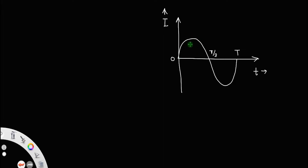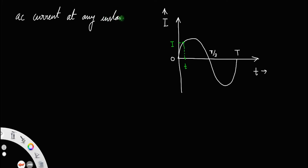Now, we are interested only in the positive half cycle. Let us take a point here at time t. At that instant, let the current — that is the AC current at any instant — we know i is equal to i₀ sin ωt. Here i₀ is the peak value of AC current and ω is the angular frequency. This is the expression for current at any instant of AC.